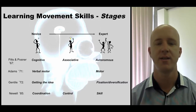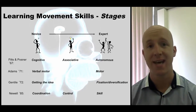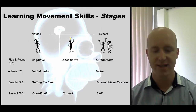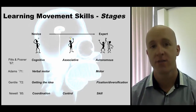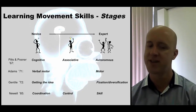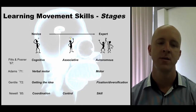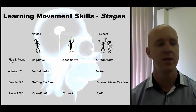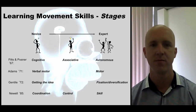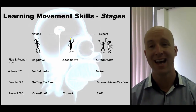Gentile uses more intuitive terminology, talking about getting the idea of the movement and having some representation of how it should look and feel. By the time you're good, he talks about it being fixated — you can do it regularly and importantly you can diversify, taking it between contexts and still succeed. That's an important part of our definition of a skill: it's transferable, not just limited to one moment or space. Newell talks about a coordination phase where you build coordination, then a phase where you gain control and produce outcomes well, to the point where it becomes a skill and is transferable across different contexts.